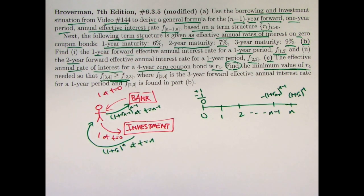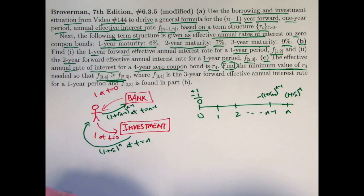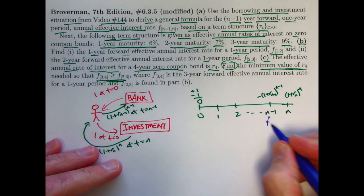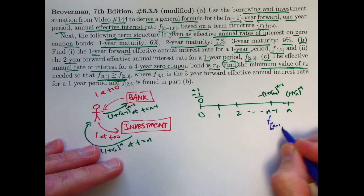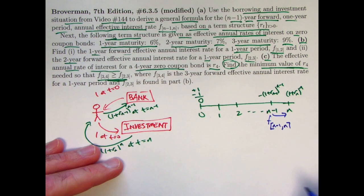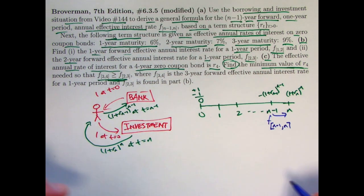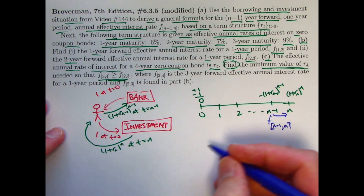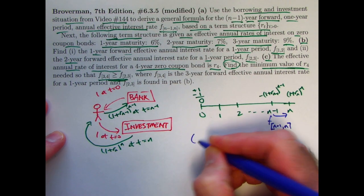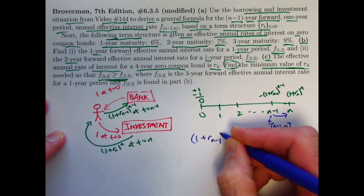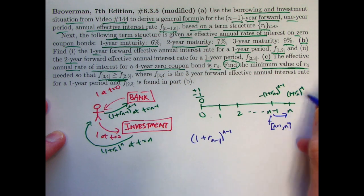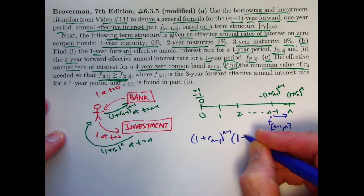So again, the forward rate, the n minus one year forward rate, that occurs over, it's effective over one year period from time n minus one to time n, that is the interest rate that's in effect for that one year period. So it's the yield based on the situation. The investment amount, one plus r sub n minus one to the n minus one power, has to grow to this thing. And the growth factor would be one plus this forward rate.